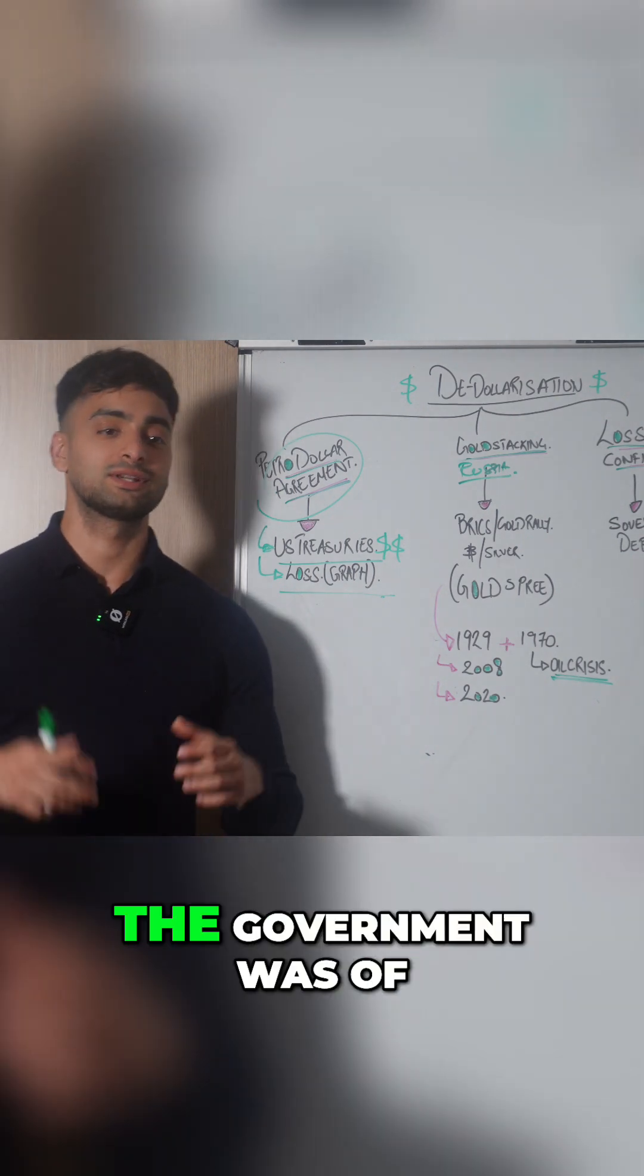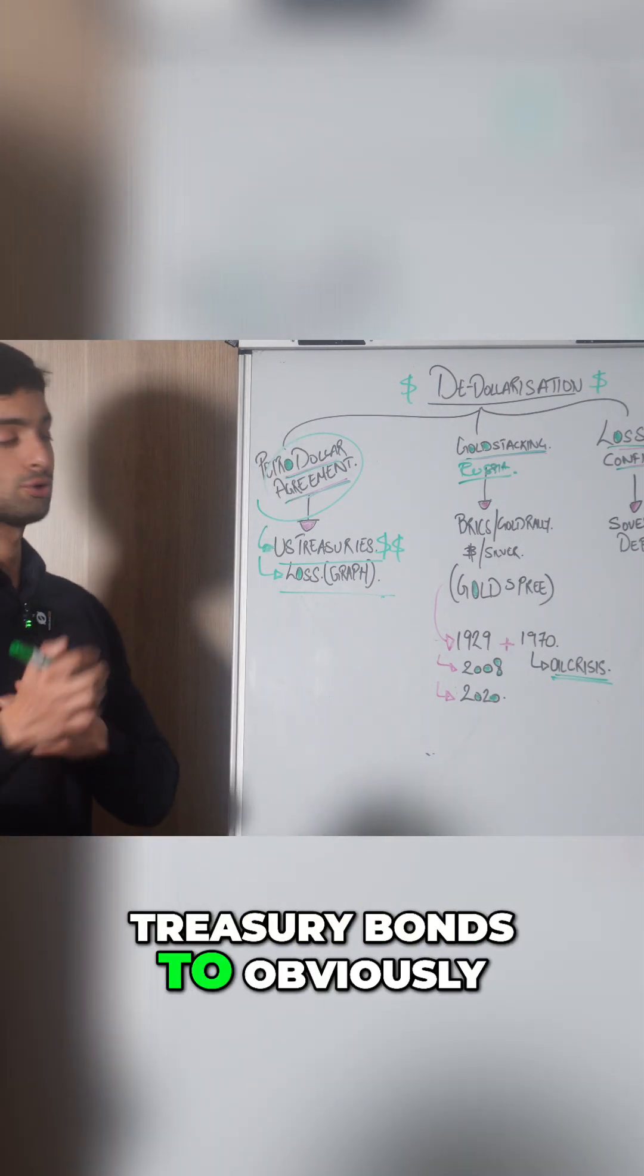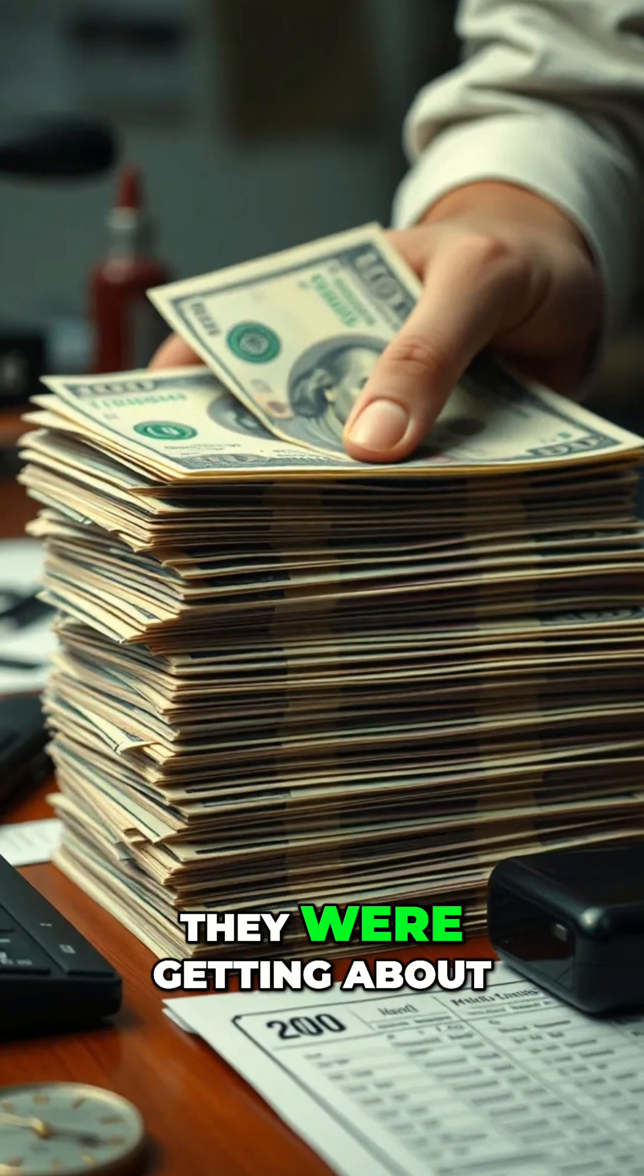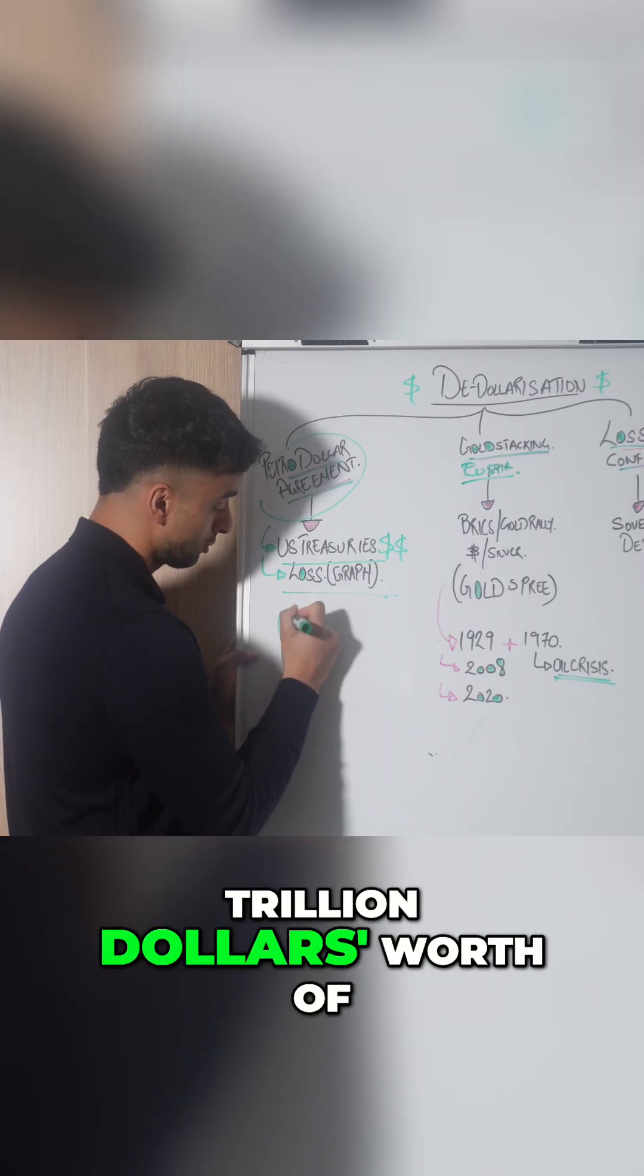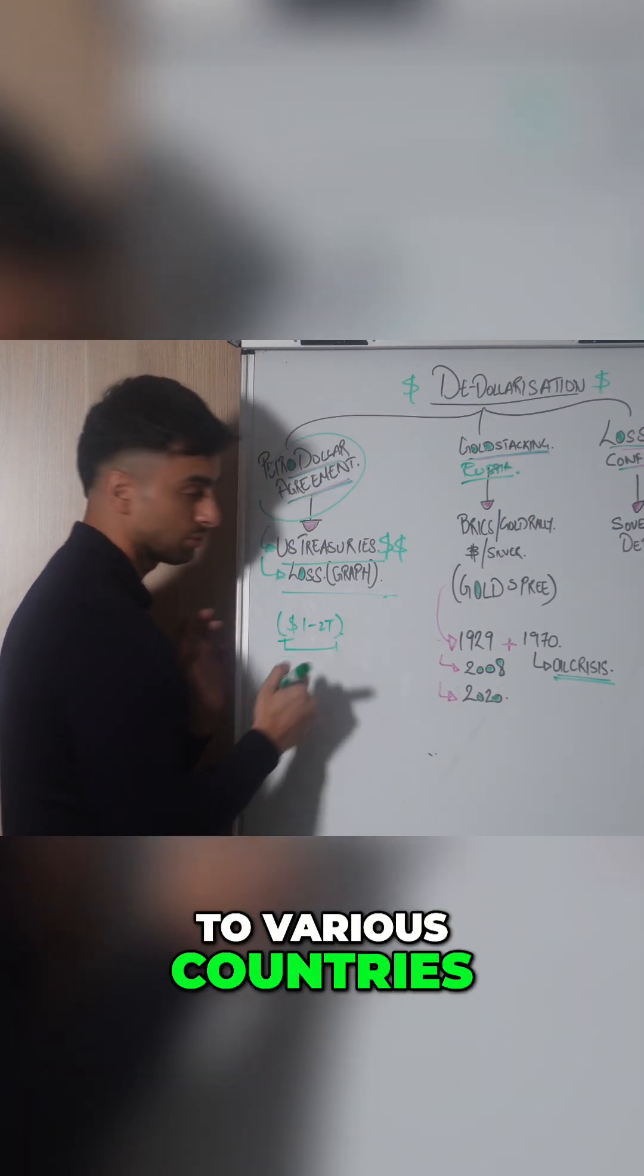Here in this instance, the government of USA was issuing U.S. treasury bonds to obviously fuel more money, and they were getting about one to two trillion dollars worth of U.S. treasuries being sold to various countries.